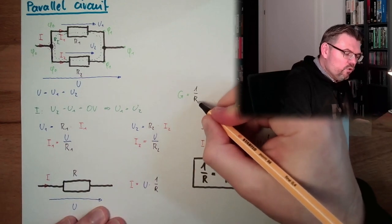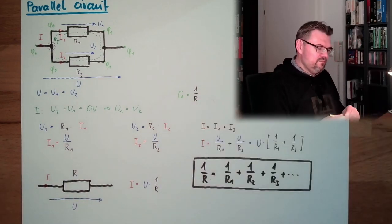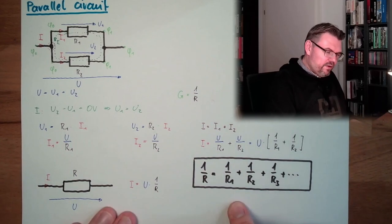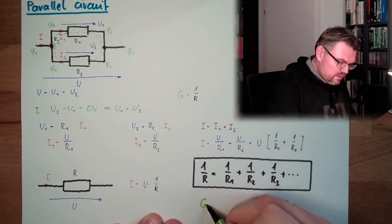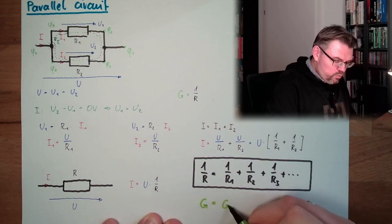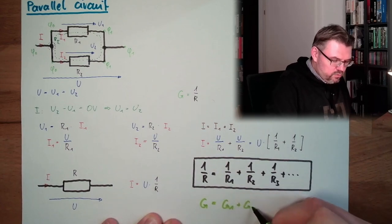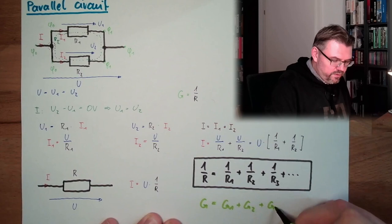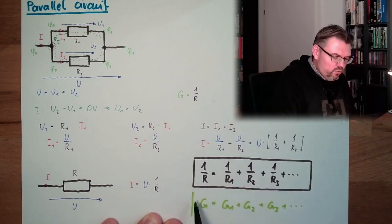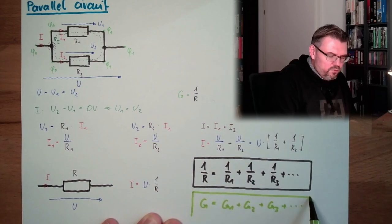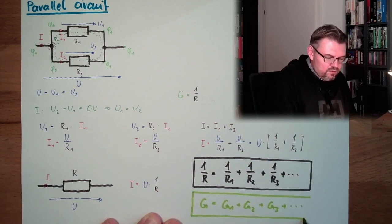And G said, how good is something conducting? If we have a look at this, we could say G, the conductance, the whole conductance, equals G1 plus G2 plus G3 plus and so on. This is how this rule looks like if we would use conductances and not resistances.